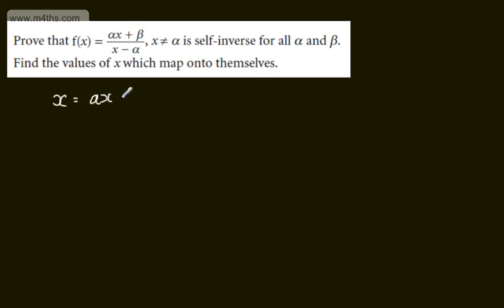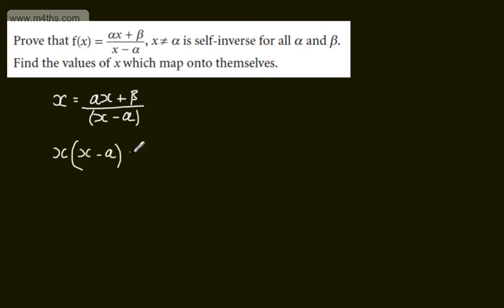We will have alpha x plus beta over x minus alpha equal to x. Multiplying both sides by the denominator, we're going to have x times x minus alpha, and that will be equal to alpha x plus beta. We've got a quadratic in x, so we expand the brackets: x squared minus alpha x is equal to alpha x plus beta.